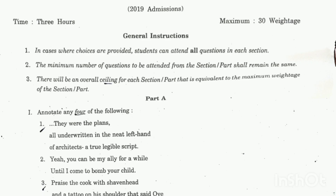Hi all, welcome to our channel. This is a question paper discussion for English Literature in the 21st Century, the fourth semester core paper. This is for 2019 admission students, for their annual exam. We will discuss the question paper, covering what to learn and how to approach it.